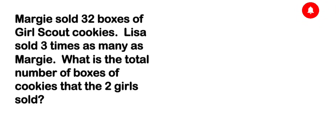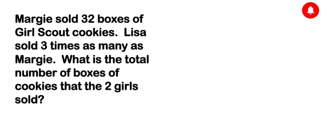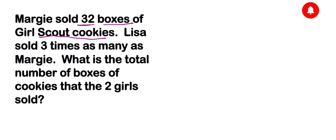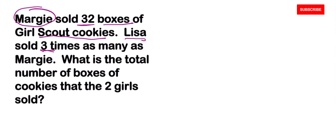Hello guys, in today's lesson we are going to focus on 'times as many' in multiplication — who has more and how can you figure it out the easiest way. In this problem, it says that Margie sold 32 boxes of Girl Scout cookies, and Lisa sold three times as many as Margie.